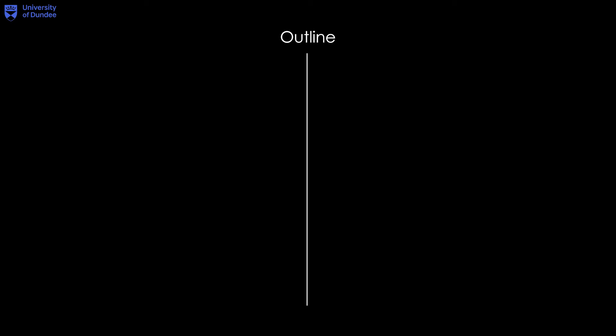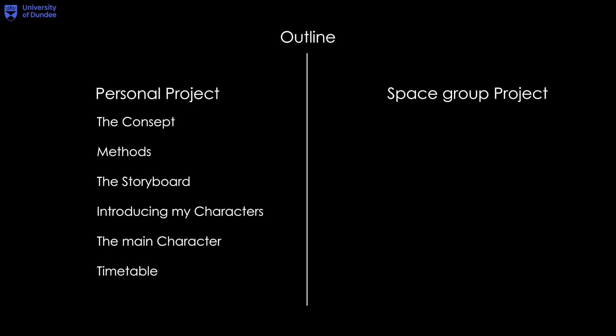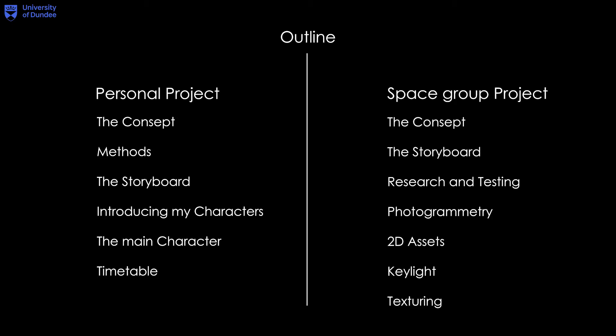The outline. I have created an outline which is separated into chapters: the personal project and the space group project. In the personal project I am going to speak about the concept, methods, the storyboard, introducing my characters, the main character, and the timetable. For the space group project I will speak about the concept, storyboard, research and testing, photogrammetry, 2D assets, key light, and texturing.